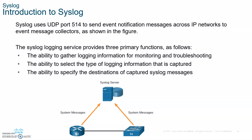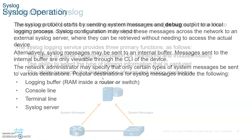The syslog server uses UDP 514, and it sends notification messages across IP networks to event message collectors. You could have either a server or your router send messages, and it captures all messages for events. The IDS system — the intrusion detection system — can look at them. You can browse through all the different events happening, just like the event viewer on your computer. When you have a lot of devices, you want that information gathered in a server.